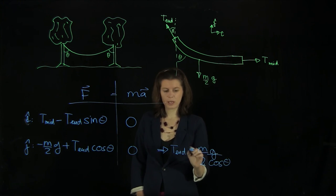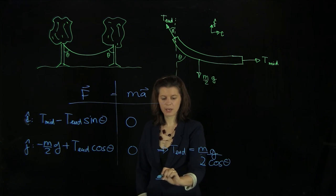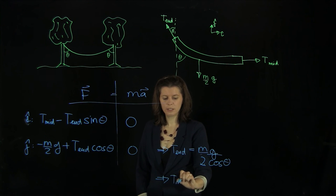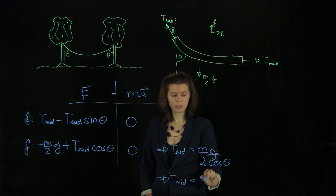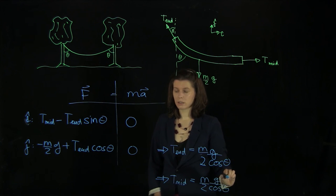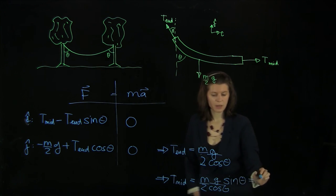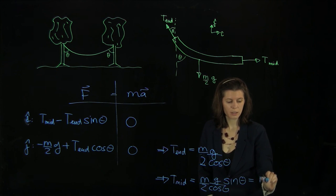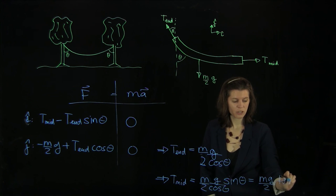And we can stick this one here into the i hat equation. So we'll get T mid equals m half g sine theta over cos theta. And that's nothing else but m g over 2 tangent theta.